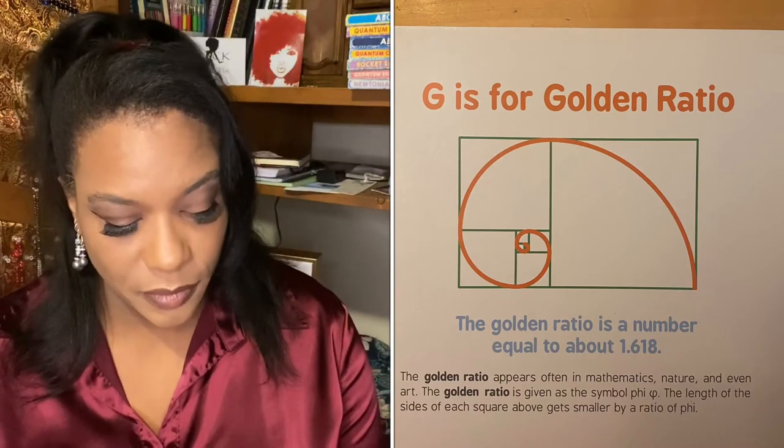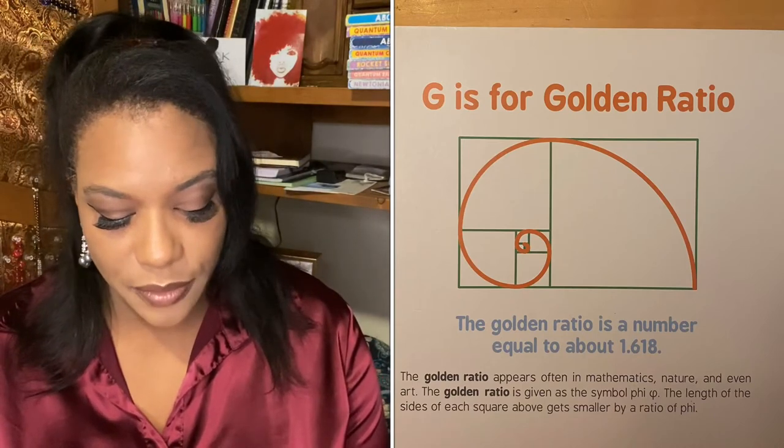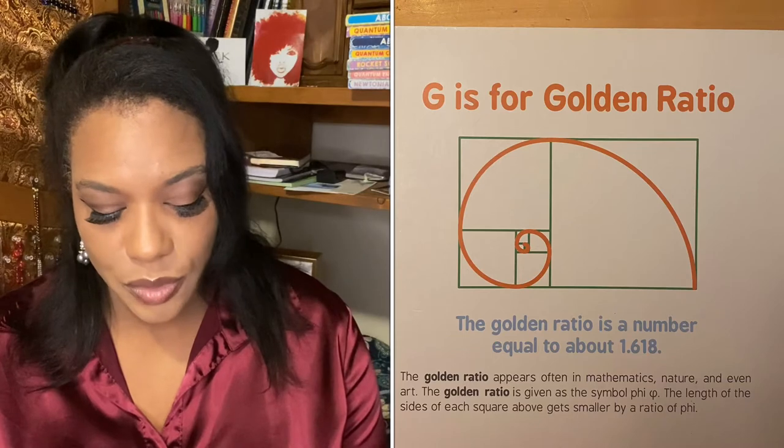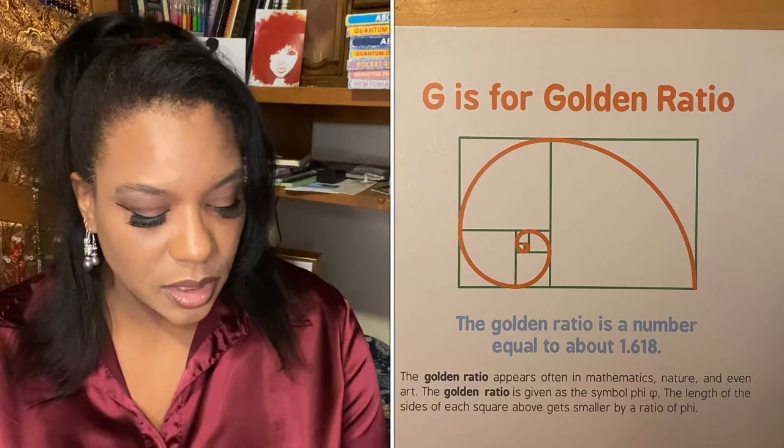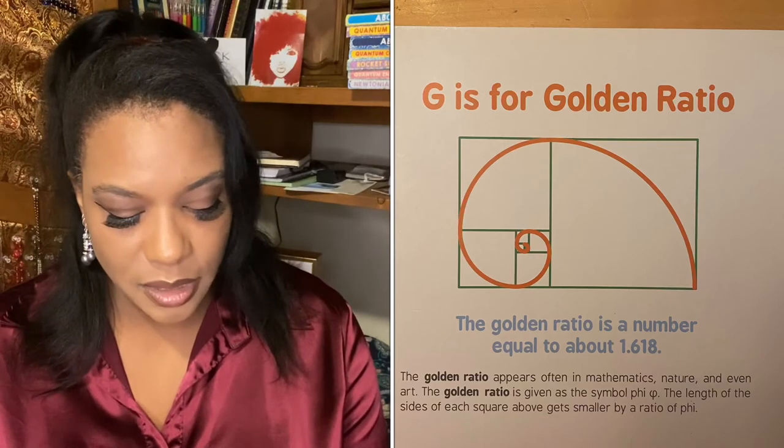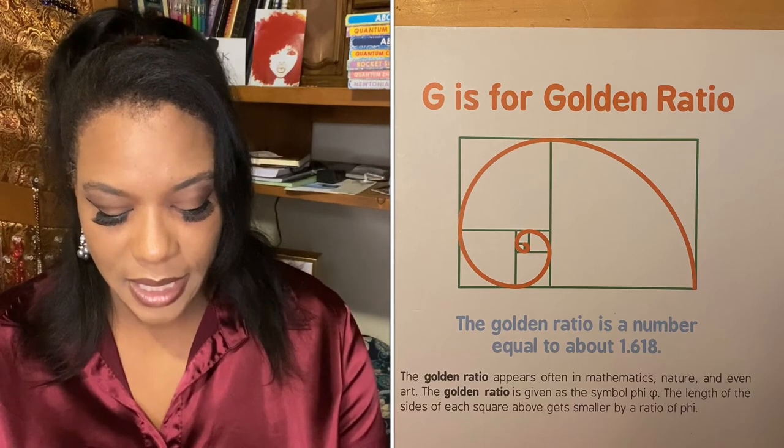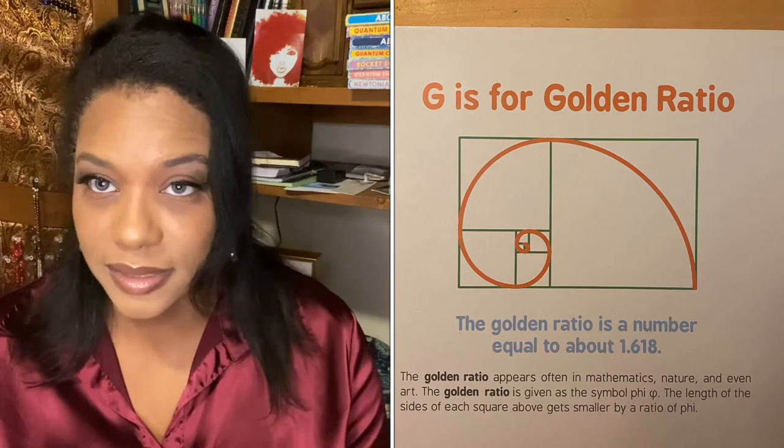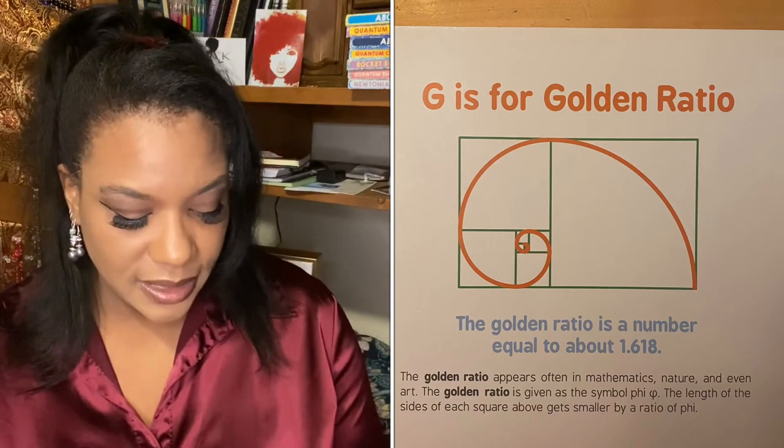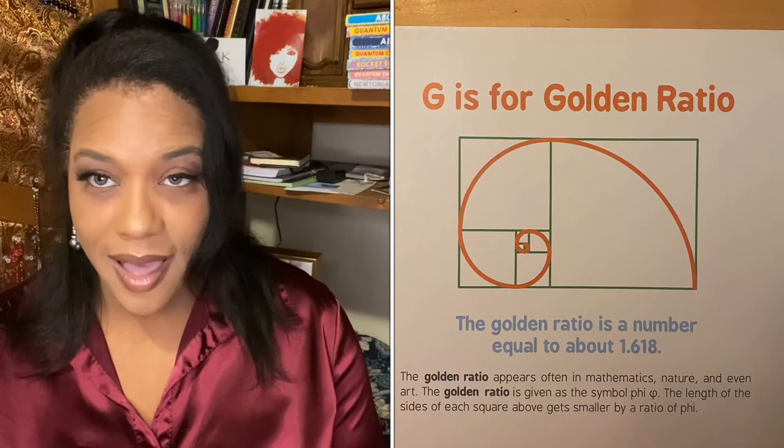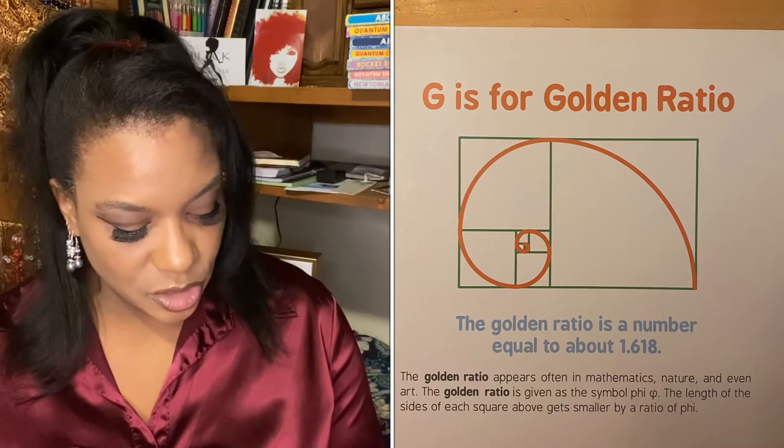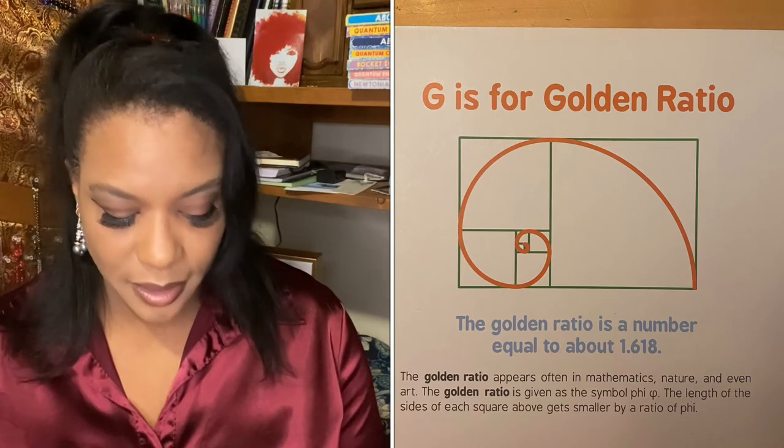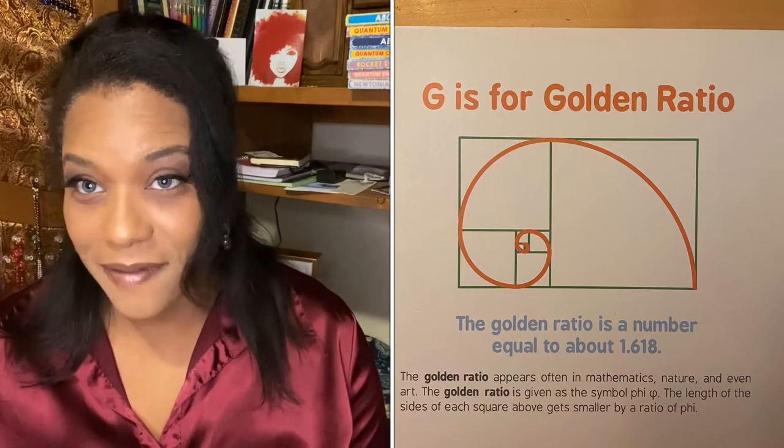G is for golden ratio. The golden ratio is a number equal to about 1.618. The golden ratio appears often in mathematics, nature, and even art. The golden ratio is given as the symbol phi. The length of the sides of each square above gets smaller by a ratio of phi.